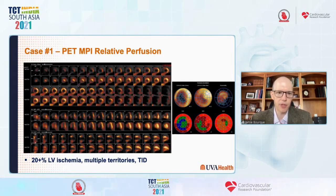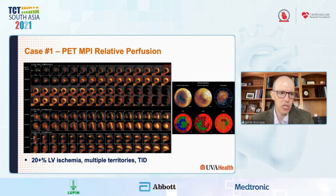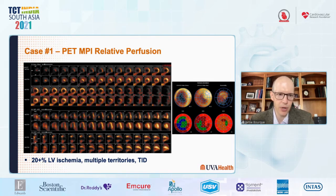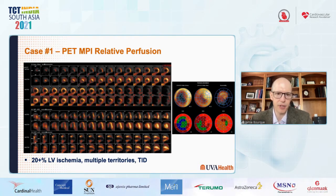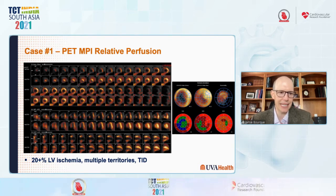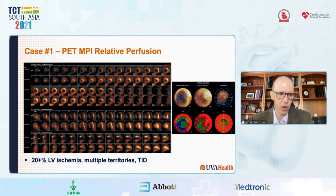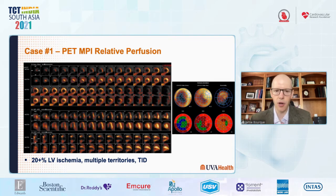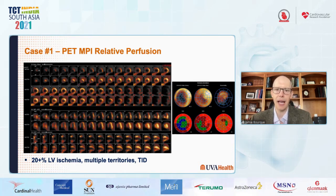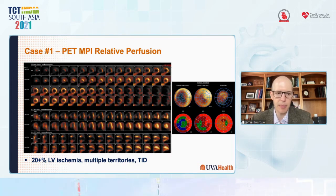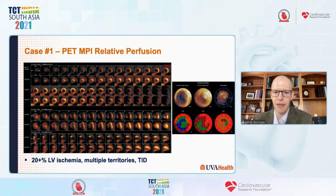Starting with the perfusion images, these are N-13 ammonia images at stress and rest. There is substantial ischemia across multiple territories — dramatic dropout in the anterior, interseptal, infraseptal, as well as the inferior walls, as well as a reversible defect in the inferolateral wall. There is also substantial dilation of the heart from rest to stress, concerning for transient ischemic dilation. The summed difference score and percentage LV ischemia was a little over 20%, deeming this a very high-risk study.